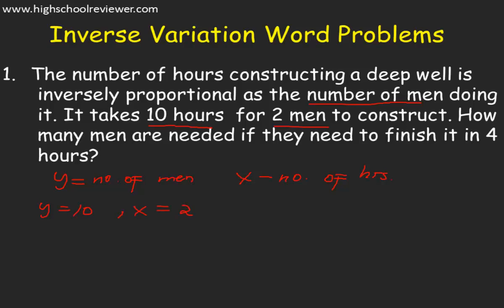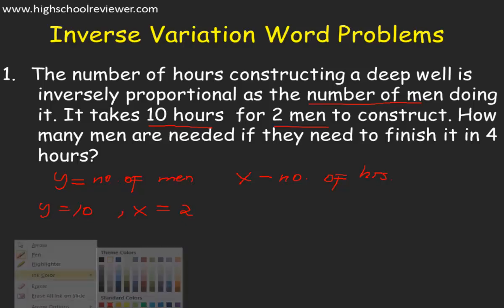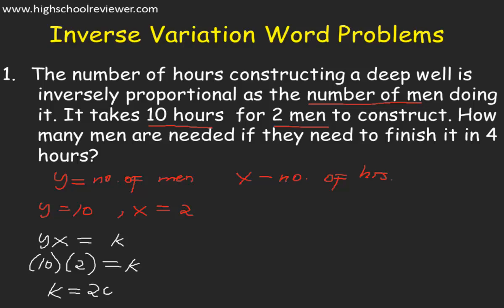We are going to find the constant of proportionality, K. Our equation will be Y multiplied by X equals K. Our Y is 10, multiplied by X which is 2, so 10 times 2 gives us K equal to 20.